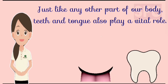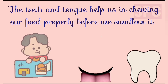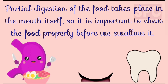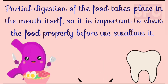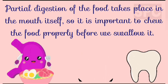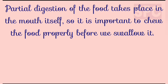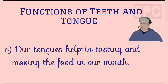Just like any other part of our body, teeth and tongue also play a vital role. They help us in chewing our food properly. Students, partial digestion of the food takes place in the mouth itself, so it is very important to chew our food properly before we swallow it. They also give shape to our face and help us in speaking clearly.